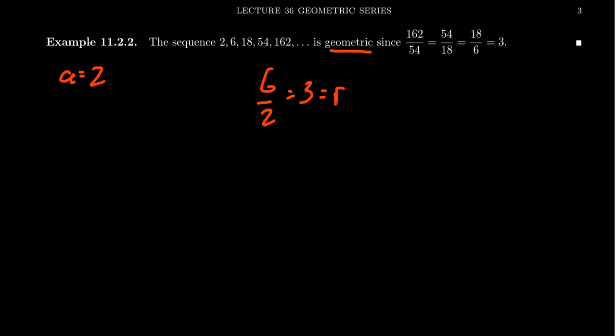Using this information, knowing that the common ratio is 3, we can find the next term of the sequence. The next term will be 162 times 3, which equals 486. The next term will be 486 times 3, which is 1458. The next term will be that number times 3, which is 4,374. We can keep going. We can always find the next term just by multiplying by 3.